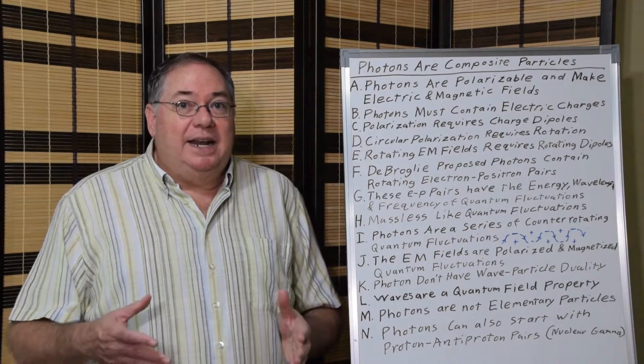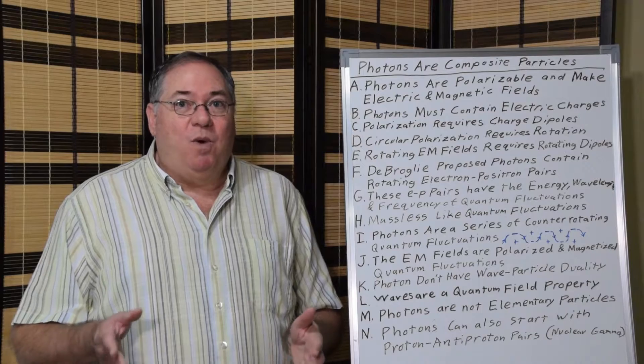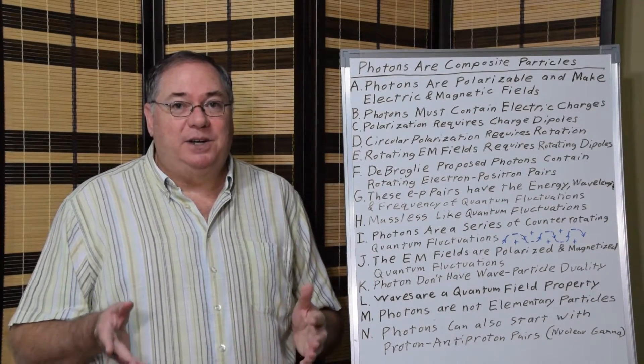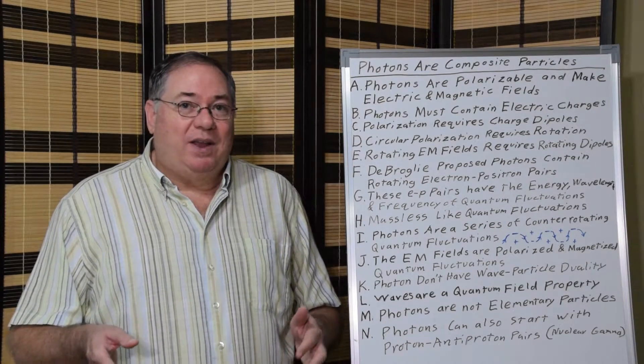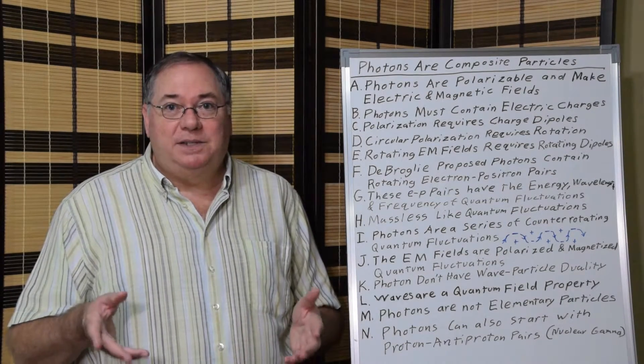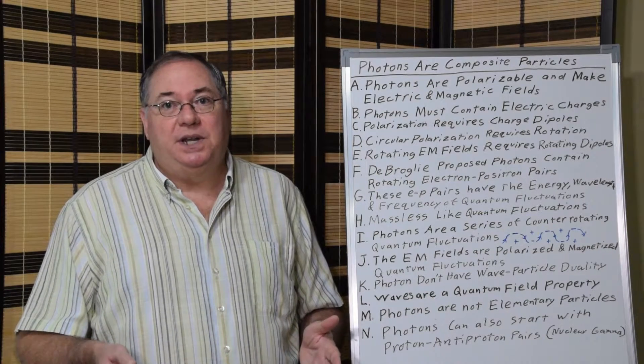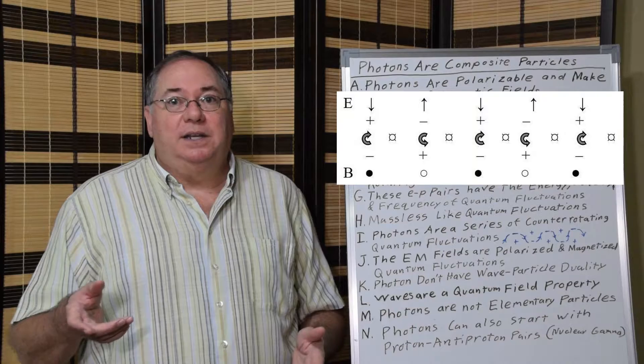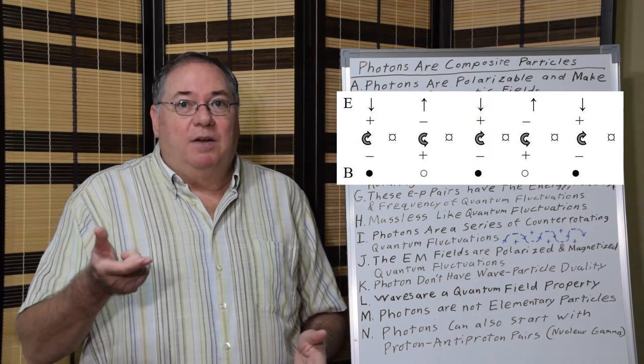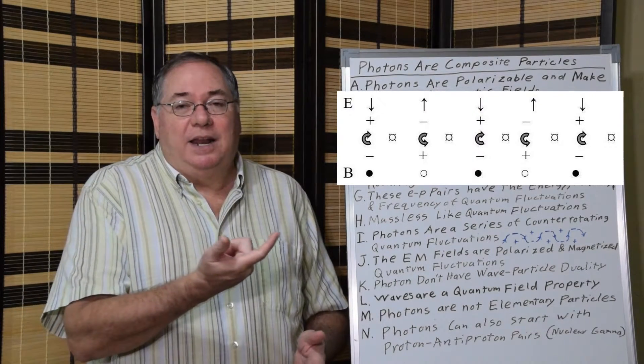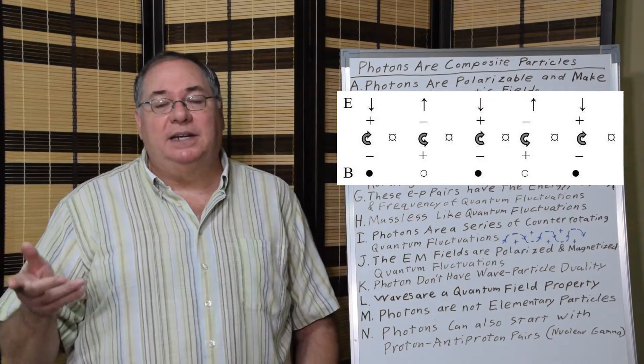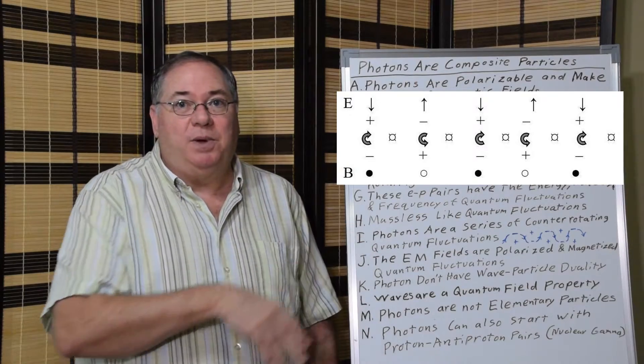And as I said, now that we do know that there are quantum fluctuations, quantum electron-positron pairs that are massless, their energy frequency and wavelength happens to match that of a photon. So we can think of a photon as being a series of quantum electron-positron pairs. Each one rotates 180 degrees during its life and gets replaced by another one.